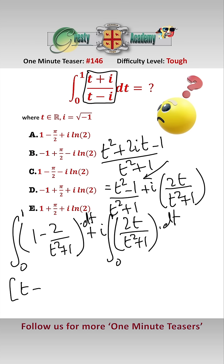That gives us t minus 2 tan to the minus 1 t between 0 and 1 for the reals, plus i log of t squared plus 1 between 0 and 1 for the imaginaries.